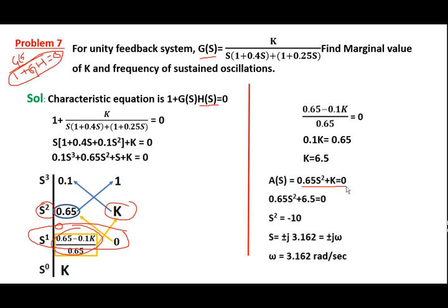We can now find the roots for S. After substituting K equal to 6.5: 0.65S² plus 6.5 equals 0. So S² equals minus 6.5 divided by 0.65, which gives minus 10. Therefore S equals square root of minus 10, which gives plus or minus J times 3.162. Comparing with S equals plus or minus J omega, omega equals 3.162 radians per second.